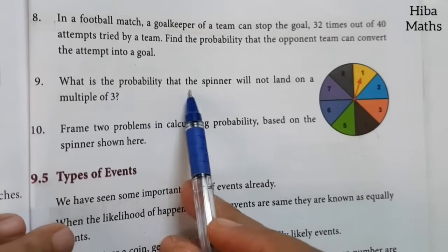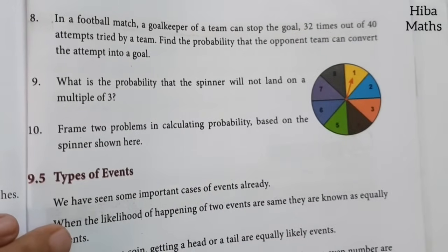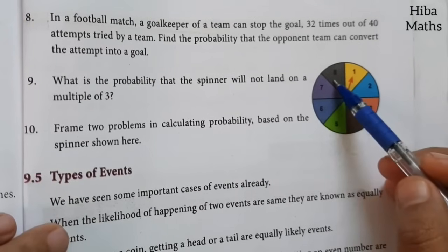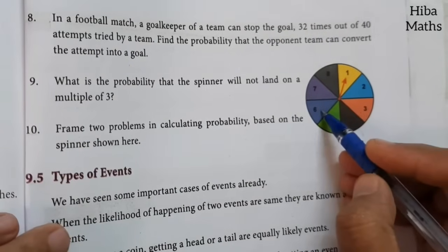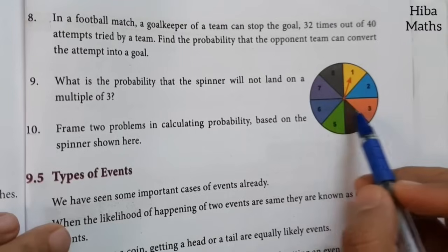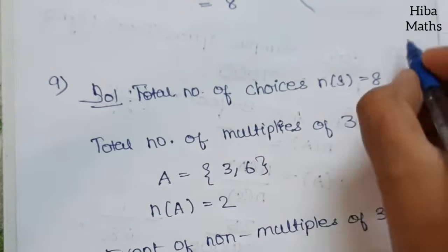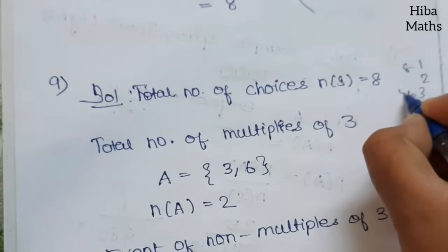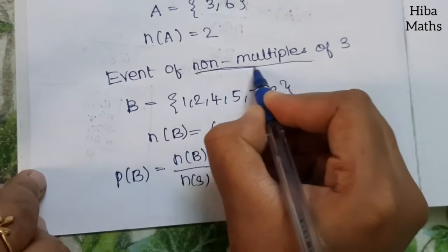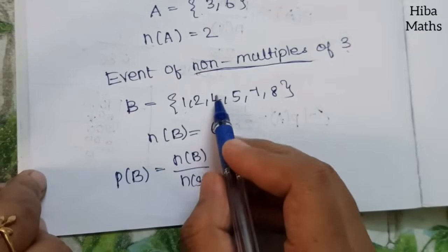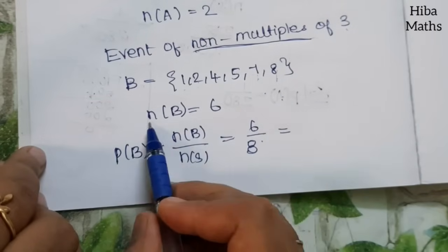Ninth question: what is the probability that the spinner will not land on a multiple of 3? The spinner has numbers 1 through 8, so n of S equals 8. Multiples of 3 in this range are 3 and 6, so there are 2 multiples of 3. Non-multiples of 3: 1, 2, 4, 5, 7, 8, so n of B equals 6. Probability equals n of B by n of S equals 6 by 8, which simplifies to 3 by 4.